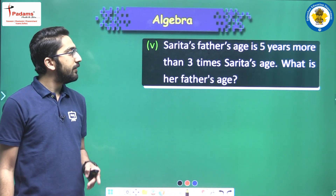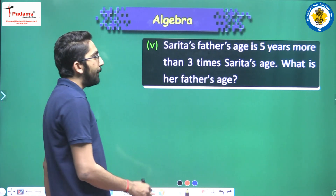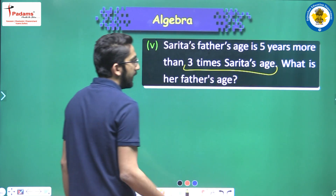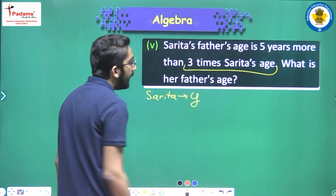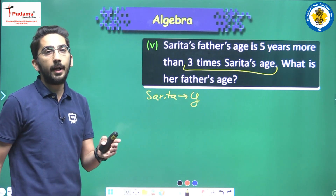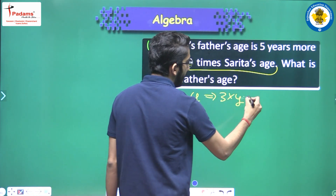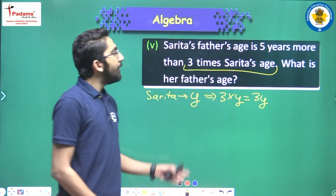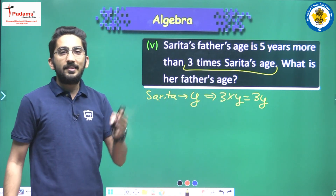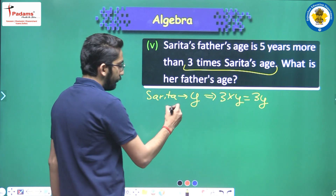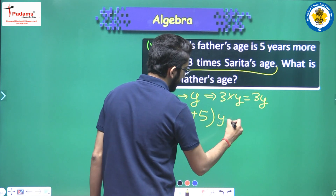Sarita's father's age is five years more than three times Sarita's age. First we find three times Sarita's age. Sarita's current age is y, so three times that is three multiplied by y, which is simply three y. Father's age is five years more than that, so we add five. Father's age will be three y plus five years.